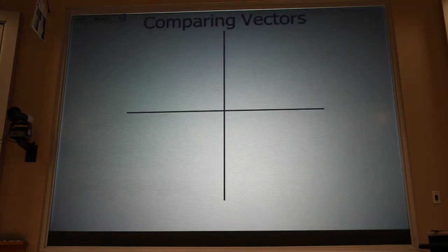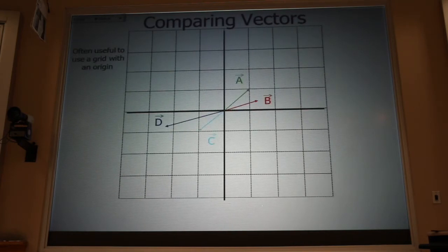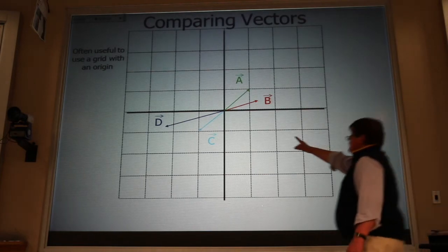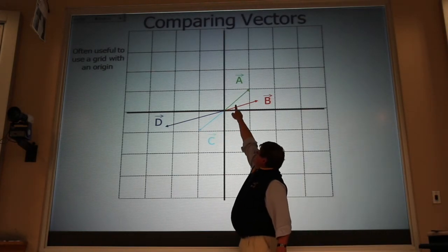Now, we often use a grid to help us visualize this a little bit better. If I put those vectors all starting from the same origin, it's clear to see that C is minus A.